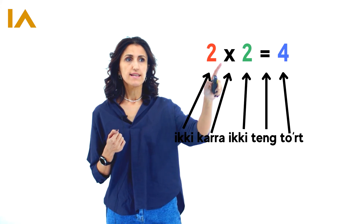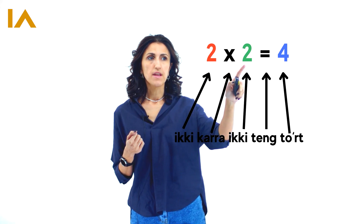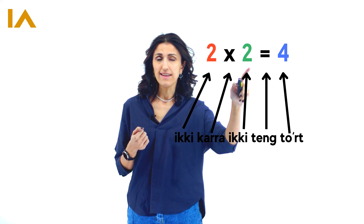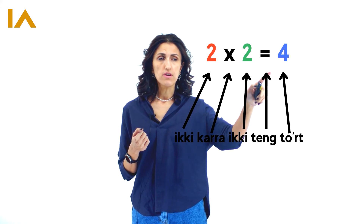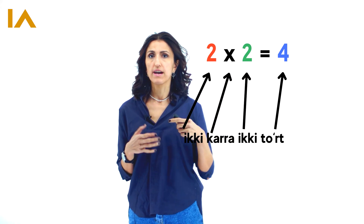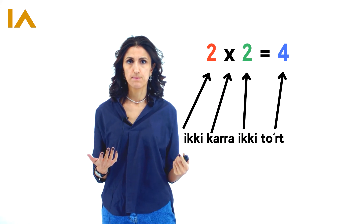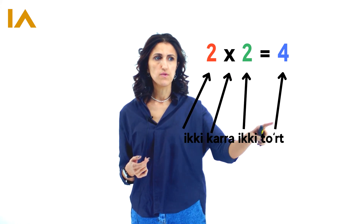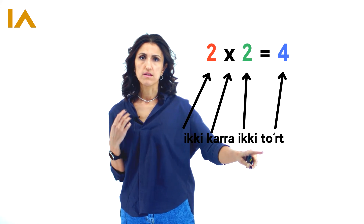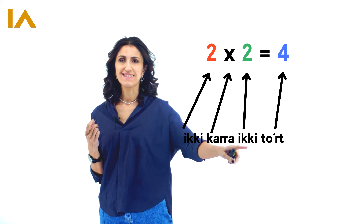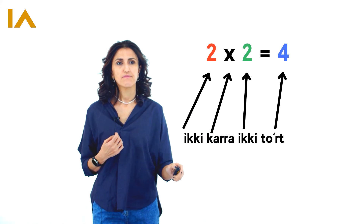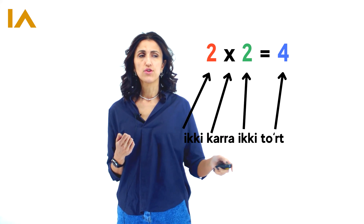Iki karra iki — I can say equals, which means ten, tor — or just iki karra iki, tor, without equals. And tor, which is four — you see I'm reading it as tor. The last T, I don't say it, it's silent. Iki karra iki, tor.